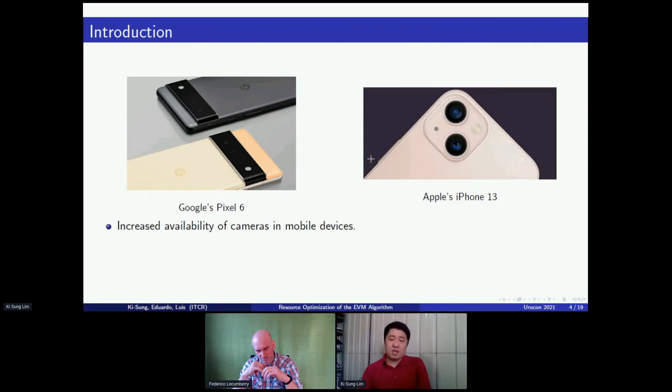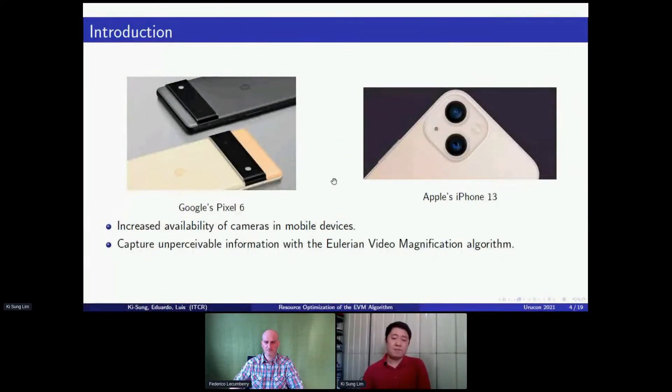Starting with the presentation, the motivation of our project is that there is abundance in mobile devices that have digital cameras that can capture video. With the availability of cameras in mobile devices, we can apply the Eulerian video magnification algorithm to use these photographic resources to capture imperceptible information, such as vital signs. The Eulerian video magnification algorithm was published in a project that was developed by MIT's Computer Science and Artificial Intelligence Laboratory in 2012, and it shows that we can extract information by magnifying little changes in the video, color changes or movement presented in the video, and translate this information to things like vital signs.